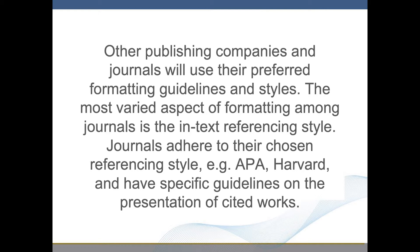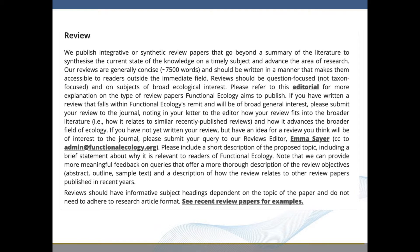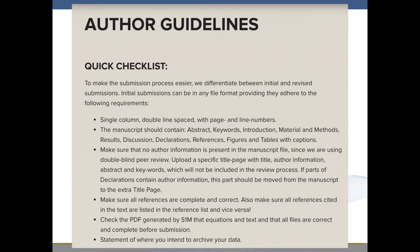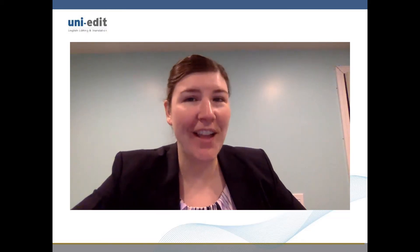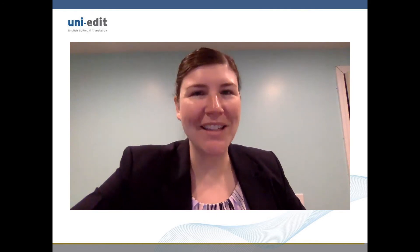The most varied aspect of formatting journals is the in-text referencing style. Journals adhere to their chosen referencing style, for example APA or Harvard, and have specific guidelines on the presentation of cited works. For example, Functional Ecology has quite the detailed referencing guidelines. In contrast, the ecology journal Oikos is less strict about in-text style and only provides brief details. When the journal states no specific guidelines, as long as authors choose a consistent style, they can use their best judgment and discretion.